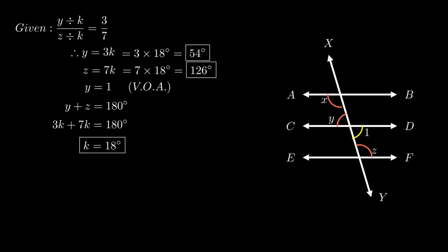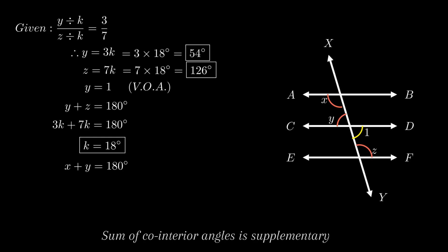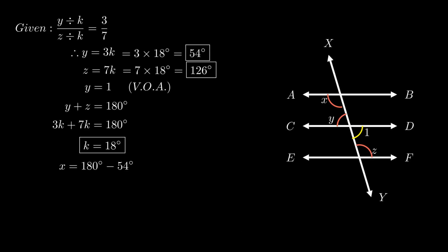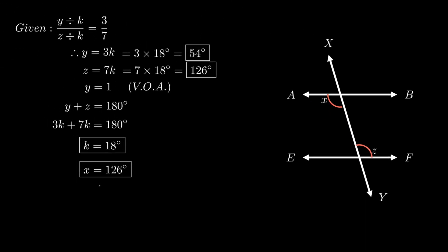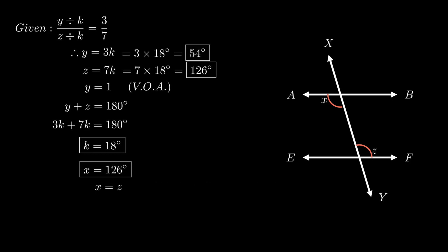The value of X can be calculated in two ways, in relation to angle Y or angle Z. Using angle Y: angle X plus angle Y equals 180 degrees as co-interior angles are supplementary, giving X equals 180 minus 54 = 126 degrees. Alternatively, from the figure, angle X and angle Z are both within parallel lines AB and EF, so angle X equals angle Z as interior alternate angles. Therefore X equals 126 degrees.